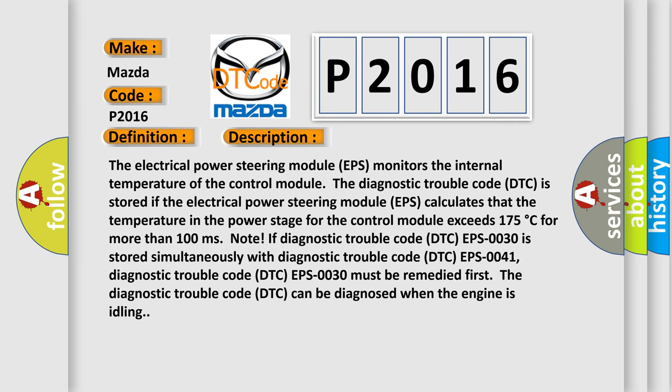The electrical power steering module EPS monitors the internal temperature of the control module. The DTC is stored if the EPS module calculates that the temperature in the power stage for the control module exceeds 175 degrees Celsius for more than 100 milliseconds. Note: if DTC EPS 0030 is stored simultaneously with DTC EPS 0041, DTC EPS 0030 must be remedied first.